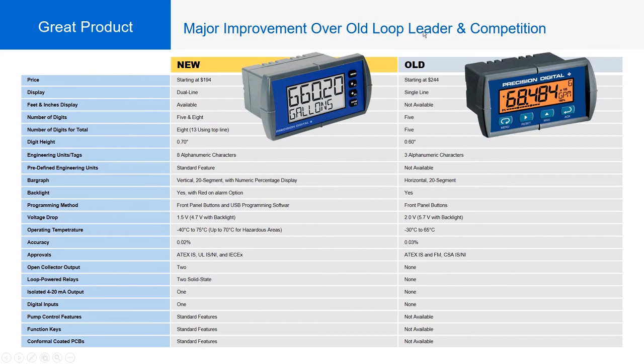Precision Digital also has an older Loop Leader series — a single-line display with an amber-colored display. The new Loop Leader series replaces it. The advantages of switching are significant: better price, improved display style, wider operating temperature range, and more available approvals. In every way, the new product is superior and can do more for a lower price, so customers familiar with the old line should definitely transition to the new one.